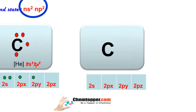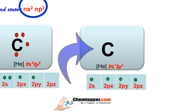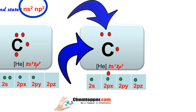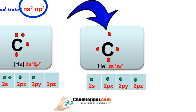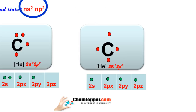In the excited state of carbon, one of the electrons from the 2s orbital will go into the empty 2p orbital. The energy required for this excitation from 2s to 2p is very small. Now there are four valence electrons present as four single electrons, so we represent these four electrons as unpaired electrons around the symbol of carbon. This is the correct Lewis dot symbol for the excited state of carbon.